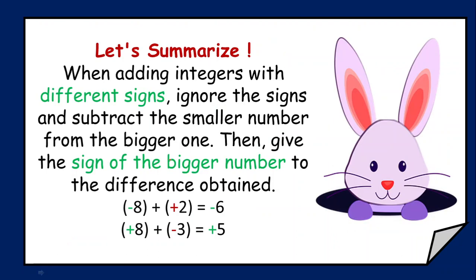When the signs are different, step one: ignore the sign. Step two: subtract the smaller number from the bigger one. Step three: give the sign of the bigger number to the answer. For example, minus 8 and plus 2 — ignore the signs, subtract 2 from 8 to get 6, and the sign of the greater number is minus, so the answer is minus 6. Now plus 8 and minus 3 — after ignoring the signs, subtract 3 from 8 to get 5, and the sign of the greater number is plus — so the answer is plus 5.